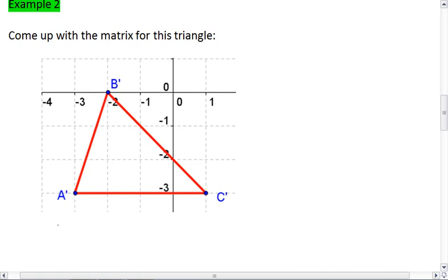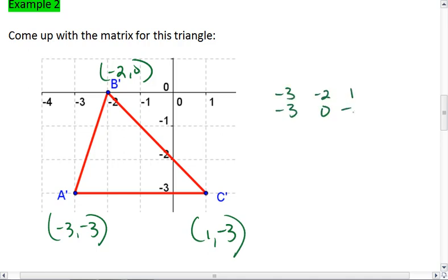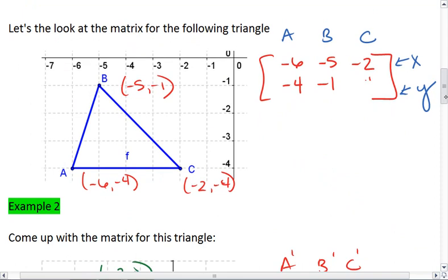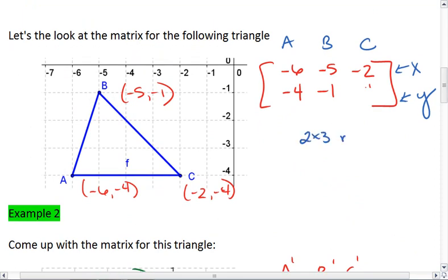In example 2, A prime is negative 3, negative 3. B prime is negative 2, 0. And C prime is 1, negative 3. So, this matrix would be negative 3, negative 3, negative 2, 0, and 1, negative 3. Again, this is where I let x be the first row, y is the second, each point is a column, and this is a 2 by 3 matrix, as was the one above. Two rows, three columns.